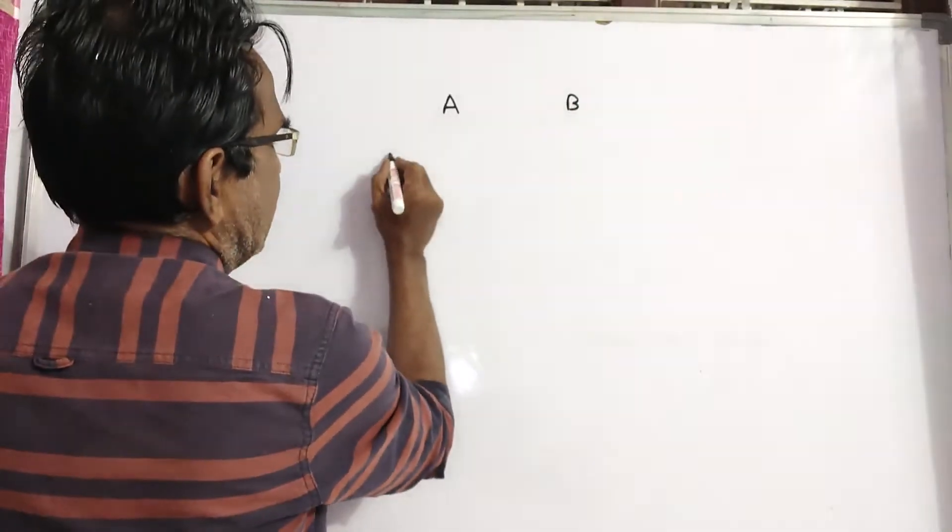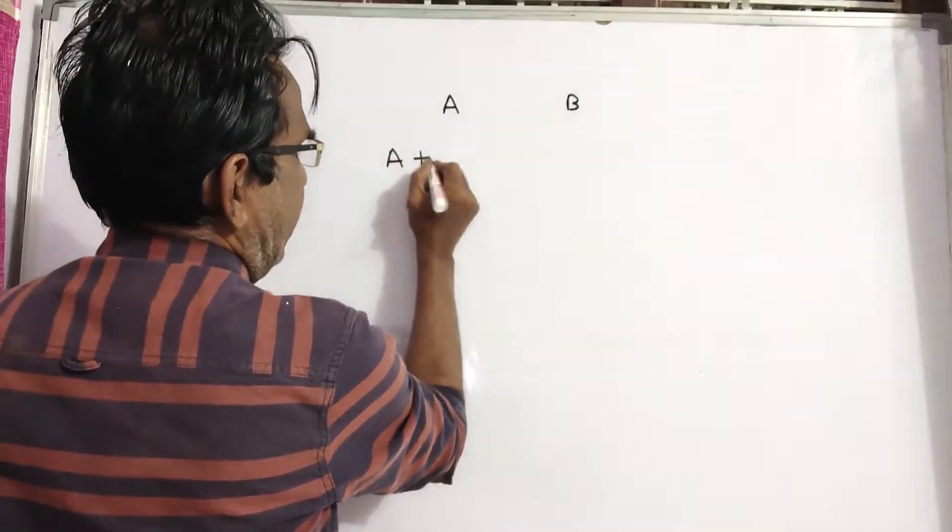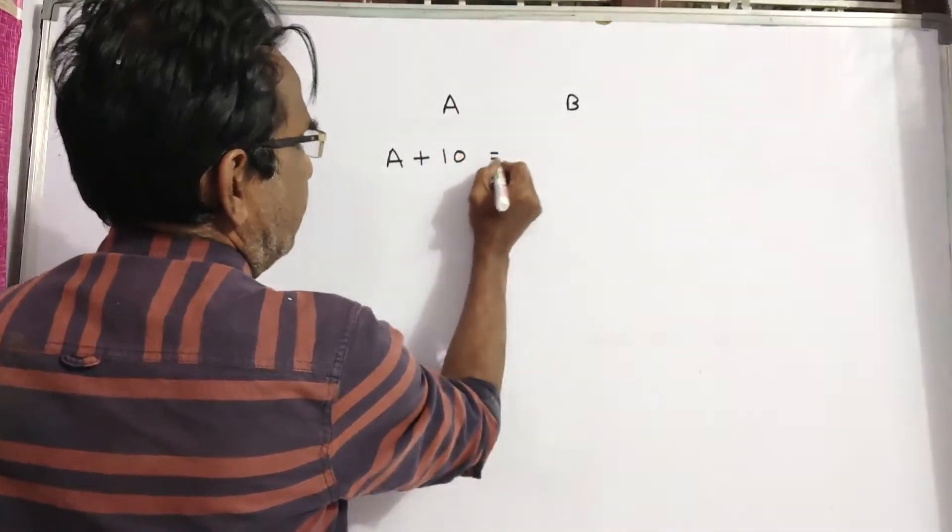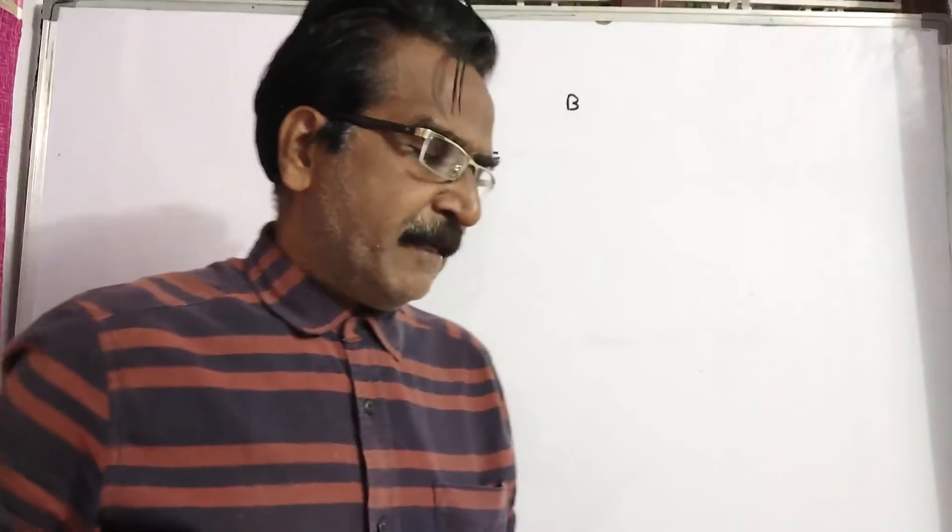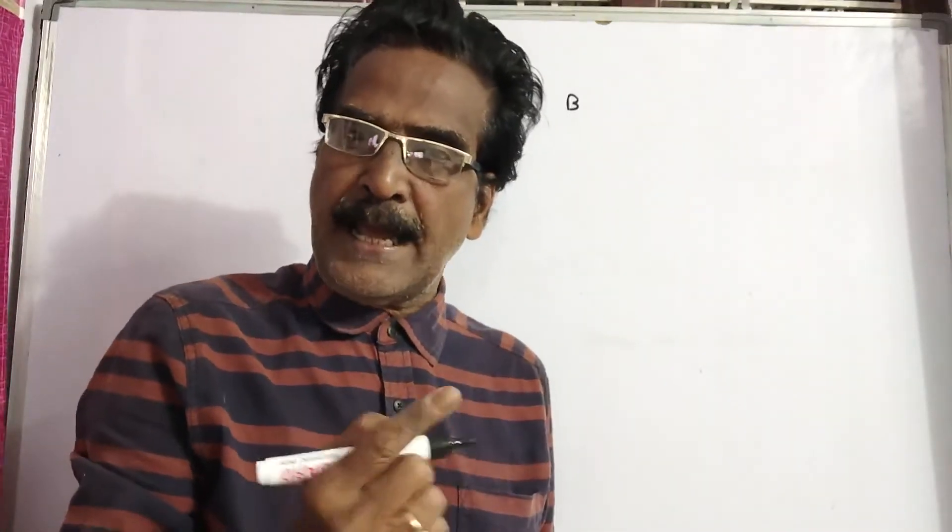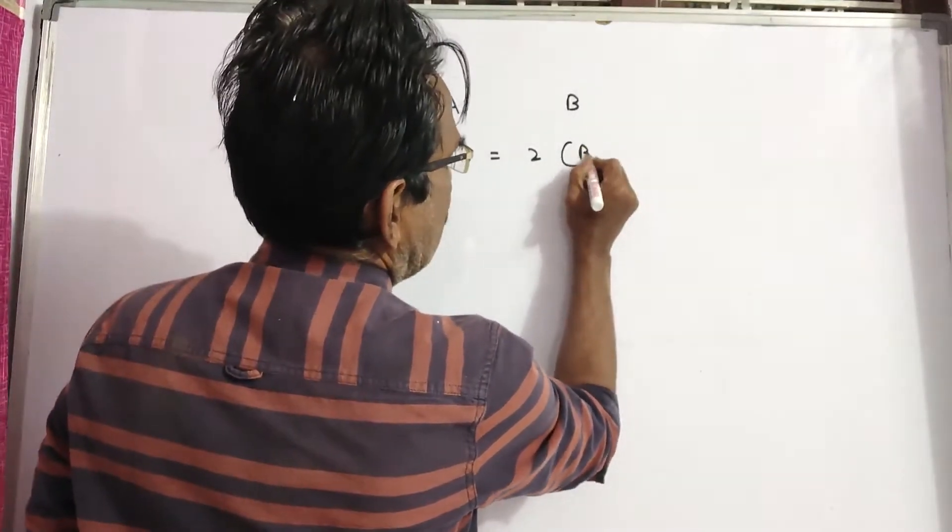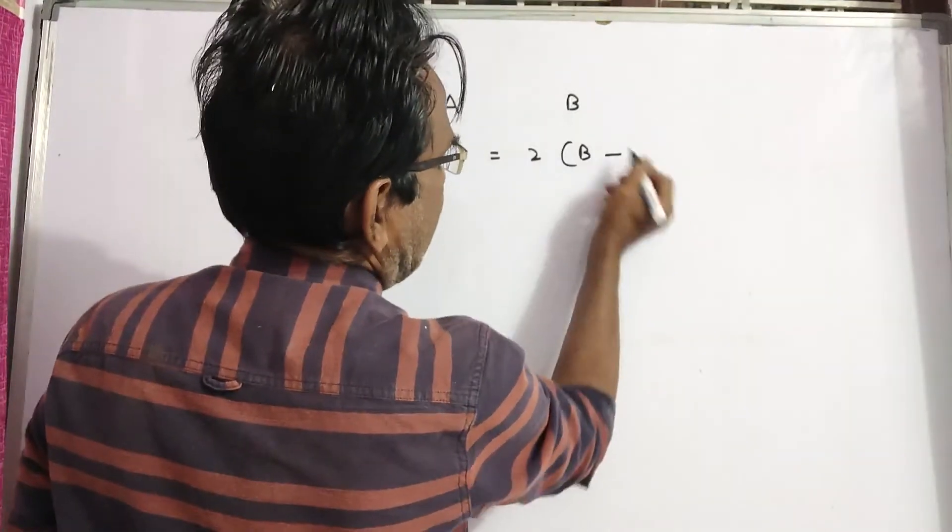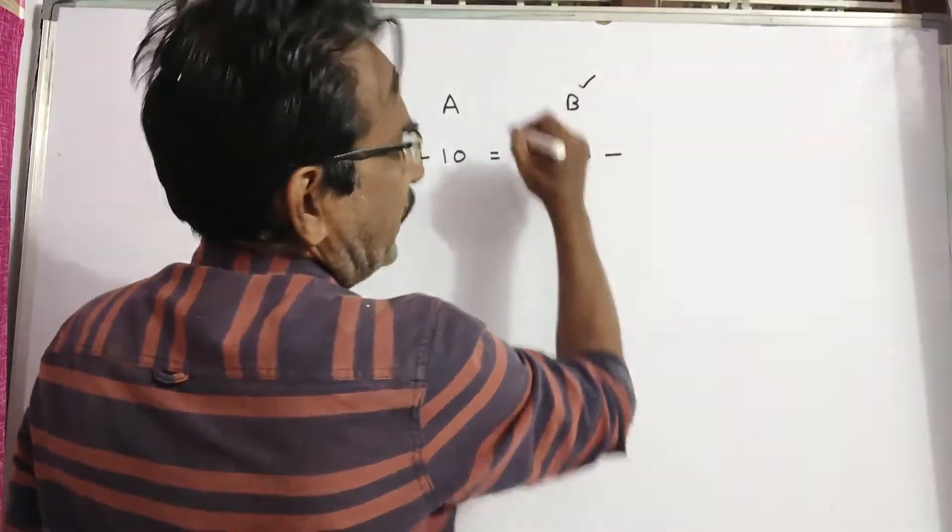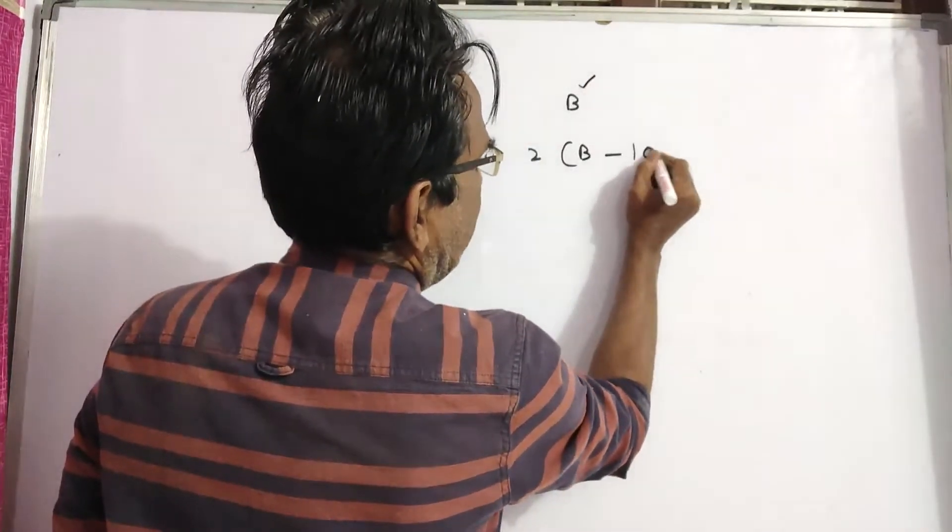In 10 years, A will be twice as old as B was 10 years ago. So A plus 10 equals twice as old as B was 10 years ago. Present is B, 10 years ago means B minus 10.